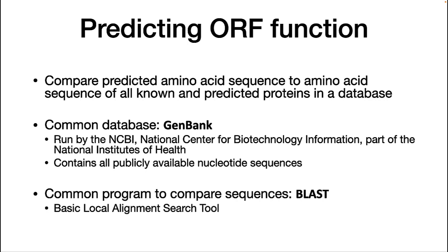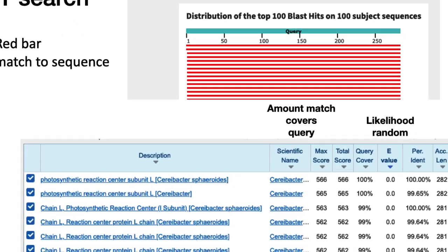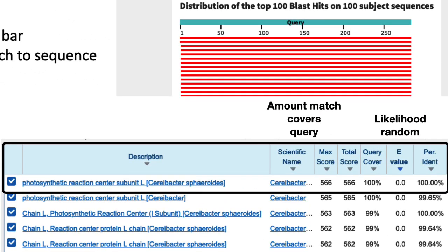A common program for doing these comparisons is BLAST, which stands for Basic Local Alignment Search Tool. BLAST is an optimized search algorithm that is very fast at comparing sequences. BLAST results tell you how well your query matches the identified sequence. The max score is the highest score possible from your sequence — the score increases for every match but decreases for mismatches and gaps. The E-value estimates the chance that this match would appear randomly; in this example it's zero. Percent identity indicates how many amino acids in the query are the same in the match sequence — in this case, 100% identical.